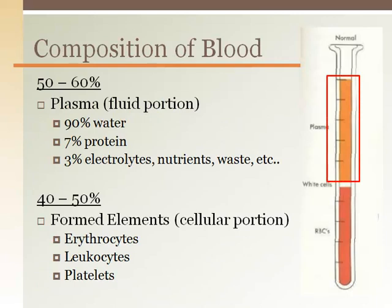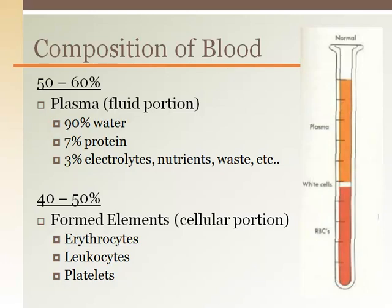Blood is 50–60% plasma, which is mostly water. The other 40–50% is made up of cells. Let's look more closely at the components of plasma.